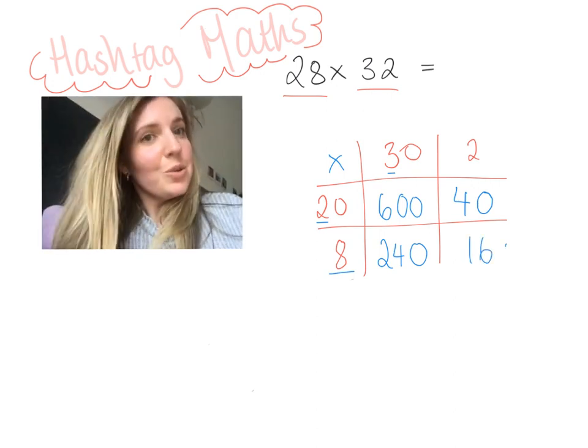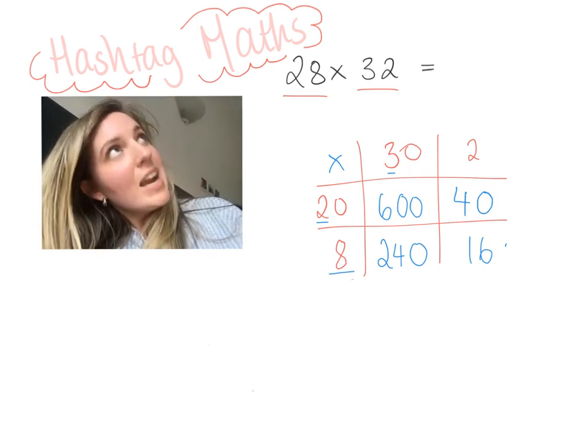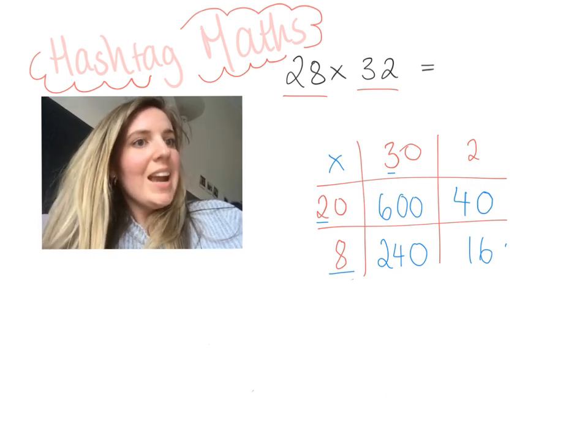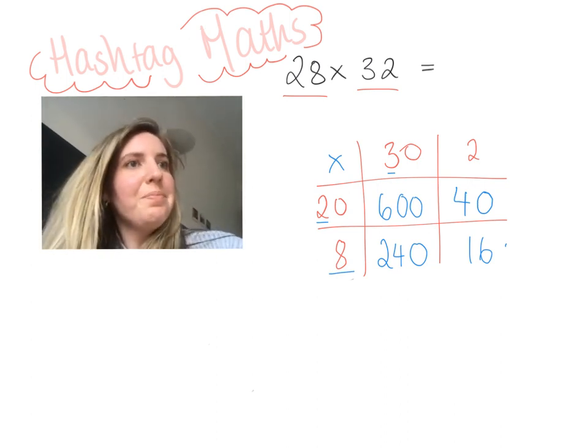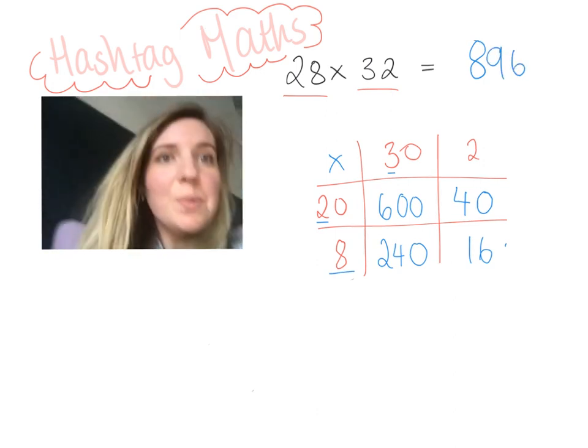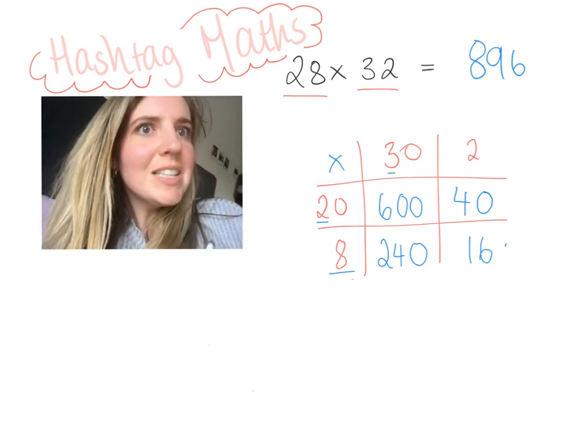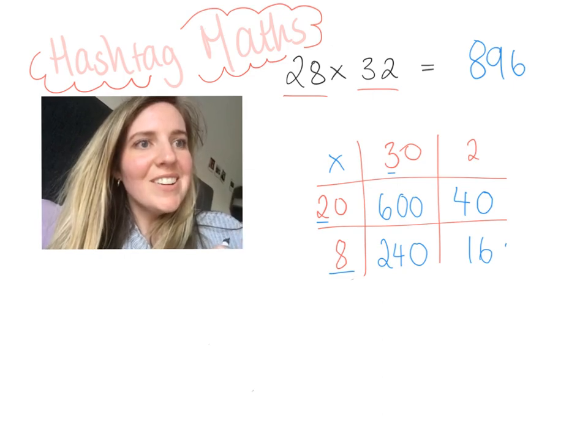Now I need to add those four numbers together. 600 plus 240 is 840. 840 plus 40 is 880. 880 plus 16 is 896. Done, guys! And do you know why we do partitioning? It's so we can do big numbers like that in our head. So have a go at doing this with some of the big questions that I'll attach at some point. Good stuff, bye!